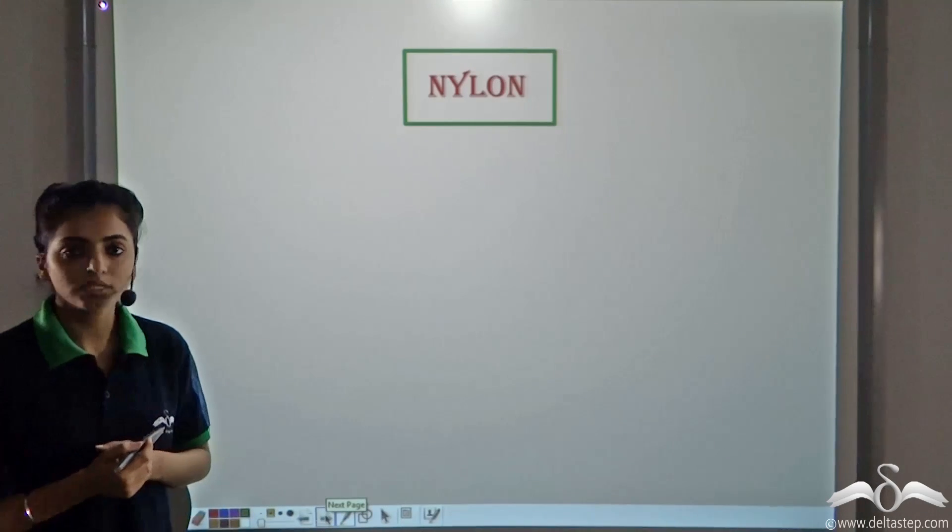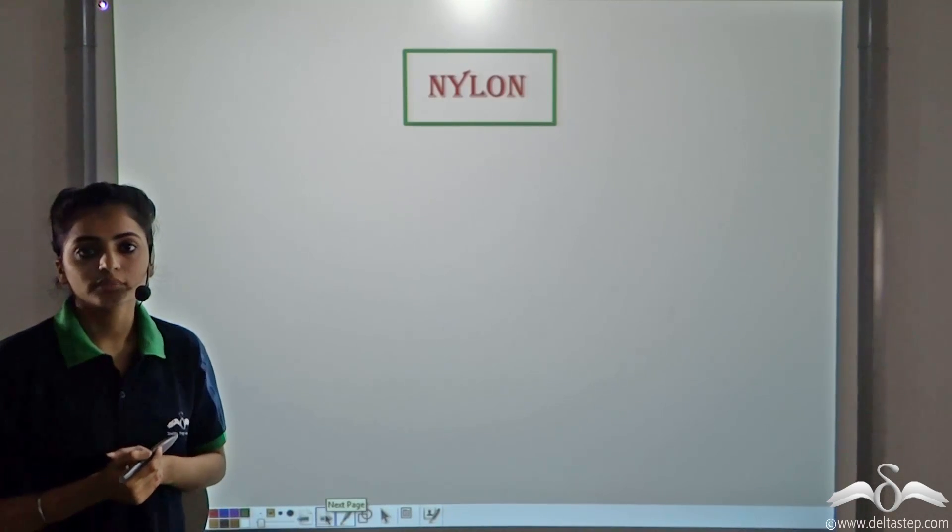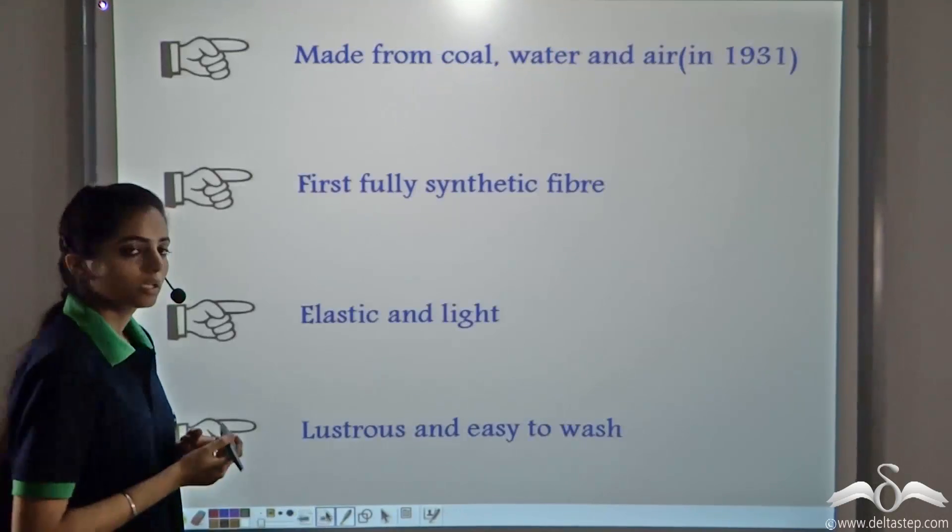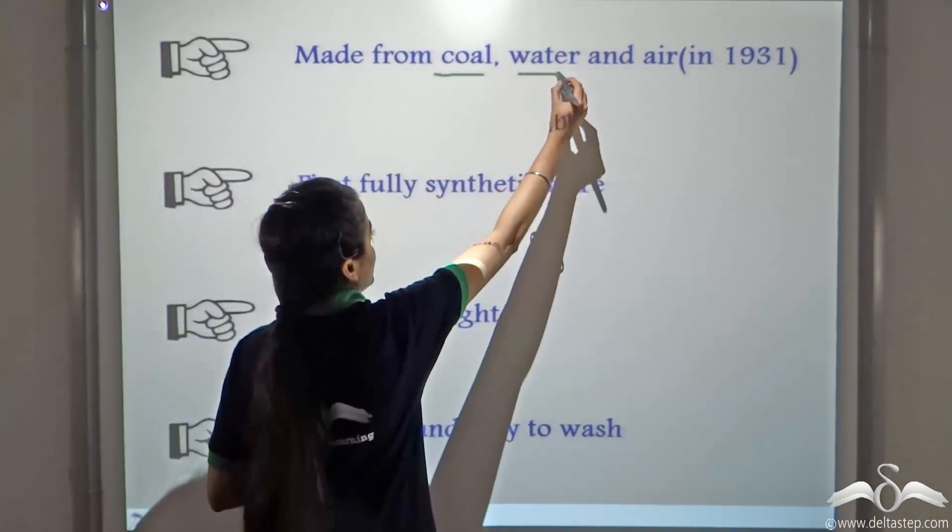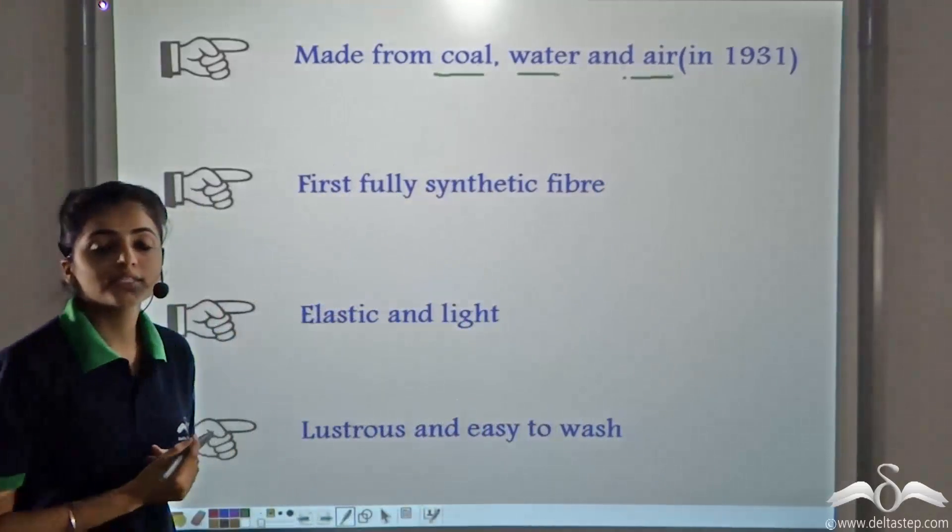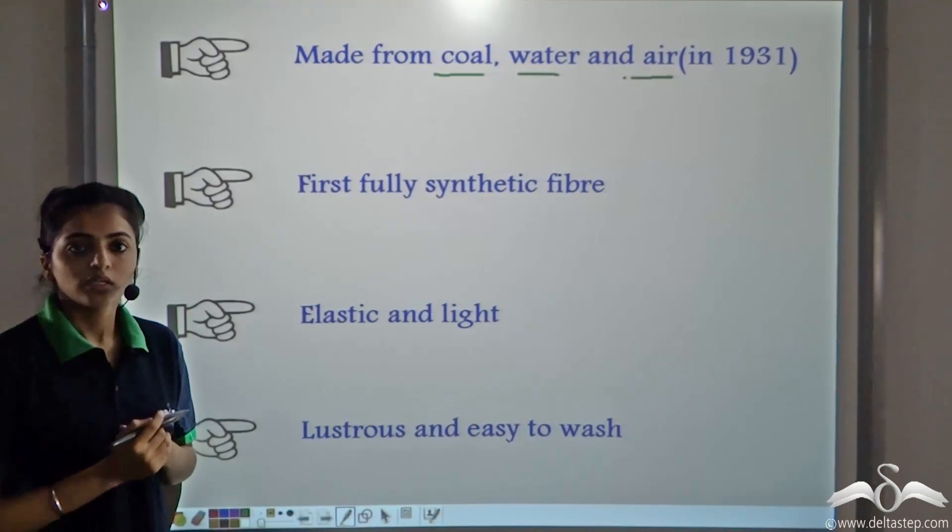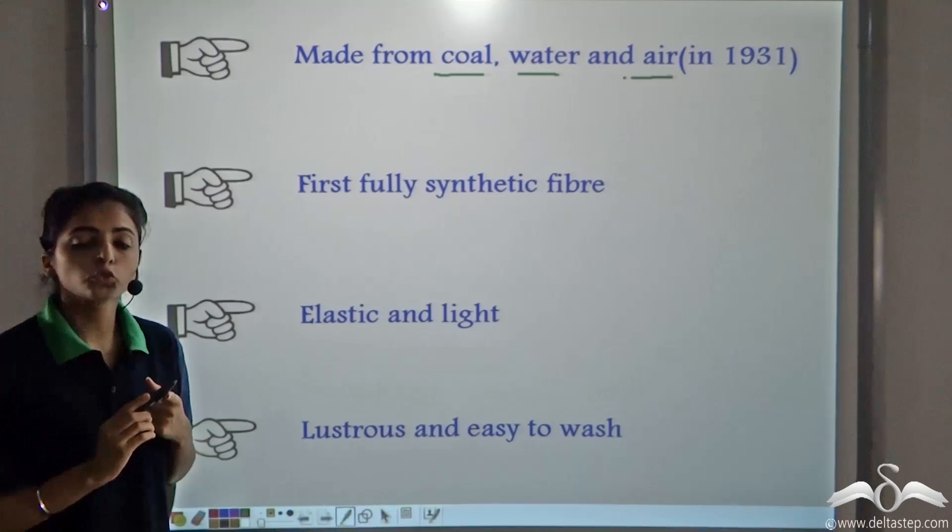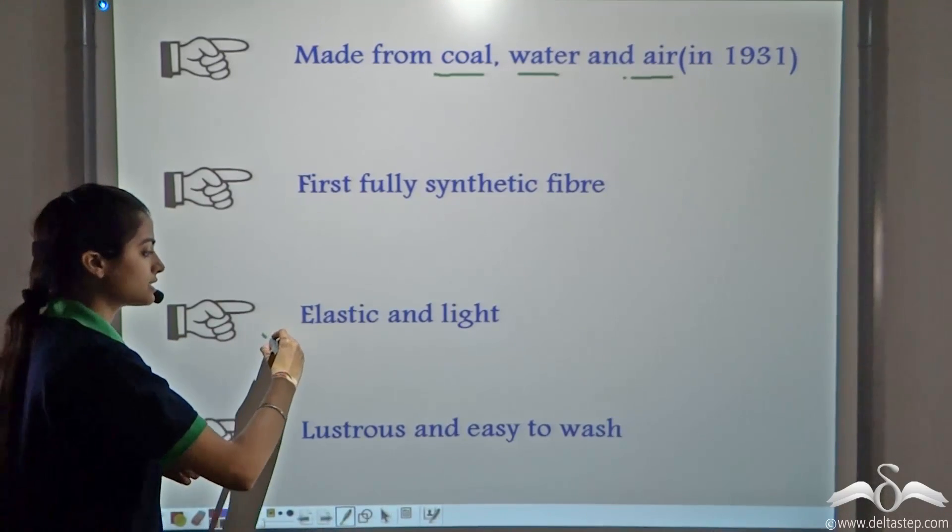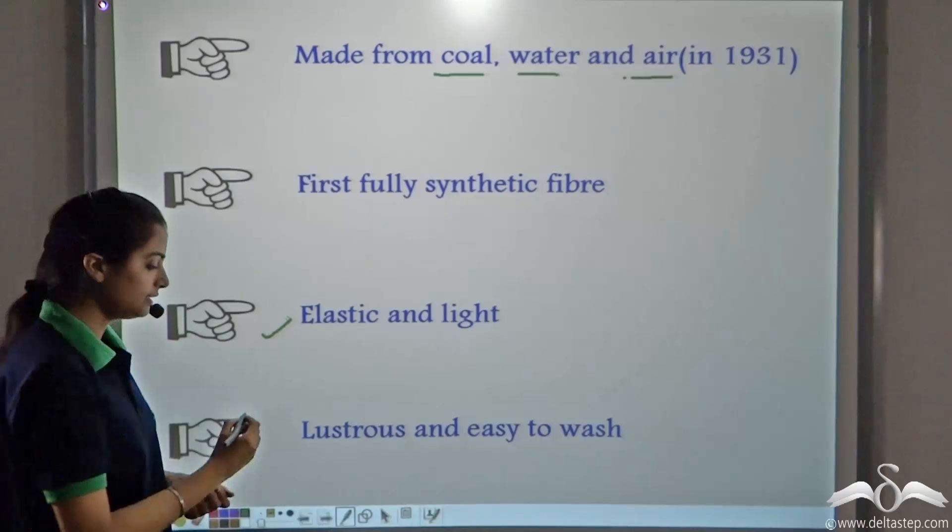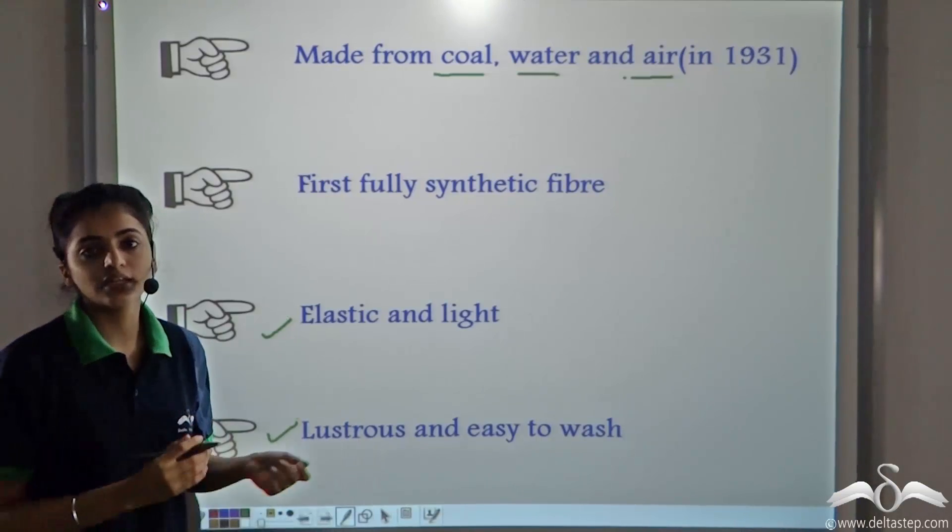Another fiber that you must have heard of is nylon. Nylon is obtained from coal, water and air. It was first synthesized in 1931. Nylon is the first truly synthetic fiber. Another property of nylon is that it is elastic and light, and it is lustrous and easy to wash.